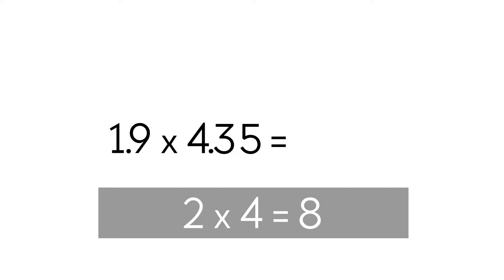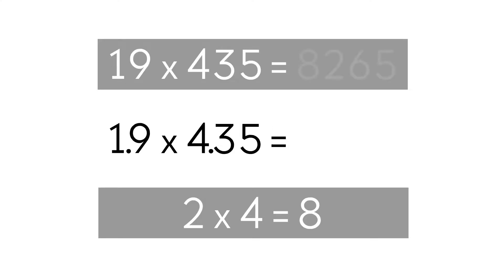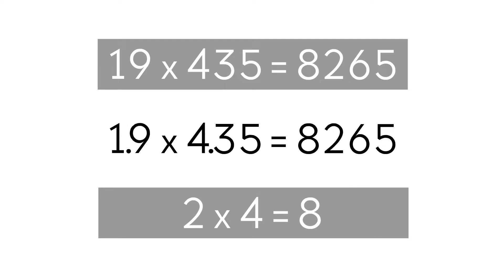Then we multiply 1.9 and 4.35 as the whole numbers 19 and 435, and we get 8,265. Now let's go back to decimals. We know from the estimation that the answer should be around 8, so we put a decimal point after 8. We can't put the decimal point before 8 because it would be 0.8, which is less than 8. We also can't put a decimal point after 2, 6, or 5 because it would be much greater than 8.